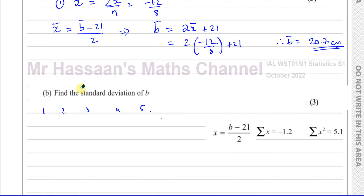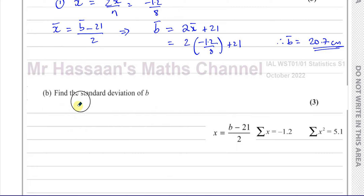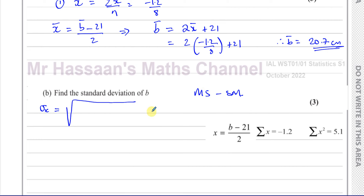But if I take those numbers and multiply them by 2, I get 2, 4, 6, 8, and 10. The range was 4 and is now 8 — it's been doubled. So the standard deviation is only affected by multiplication and division; it's not affected by addition and subtraction. We need to find the standard deviation of b, so first I'll find sigma x using the formula: standard deviation equals the square root of the mean of the squares minus the square of the mean.